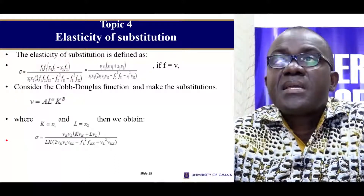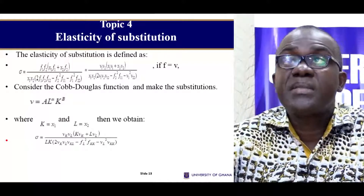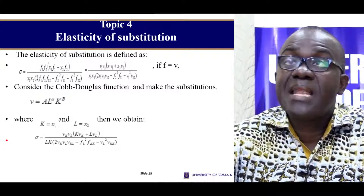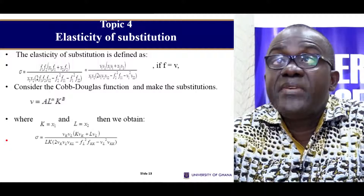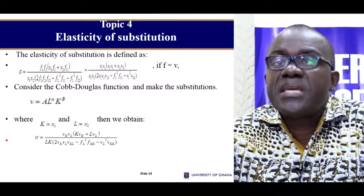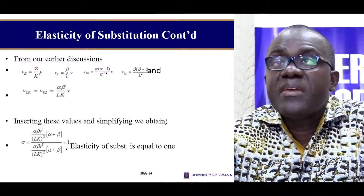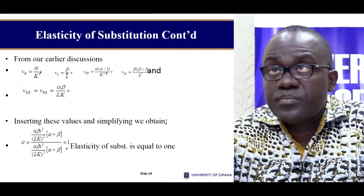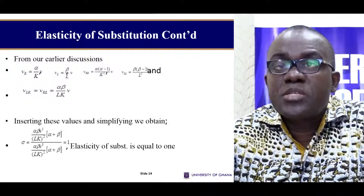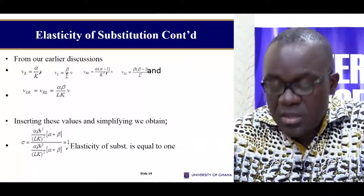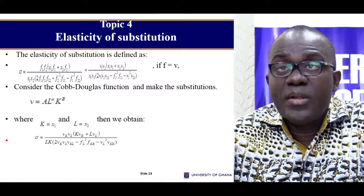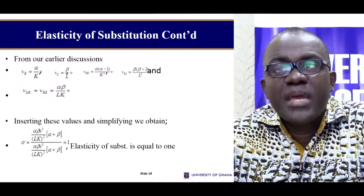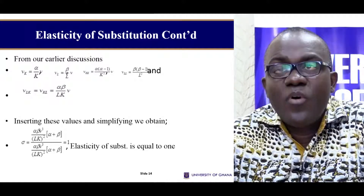Now for the elasticity of substitution — there is a formula we discussed previously. In that formula we had f₁ and f₂, but here we change notation to vL and vK for convenience. This is our Cobb-Douglas function; if we relabel K as x₁ and L as x₂ we have this form. Taking the differentials and inserting all first and second-order values into the elasticity of substitution formula, we evaluate and get one. So for a Cobb-Douglas function, the elasticity of substitution is equal to one.